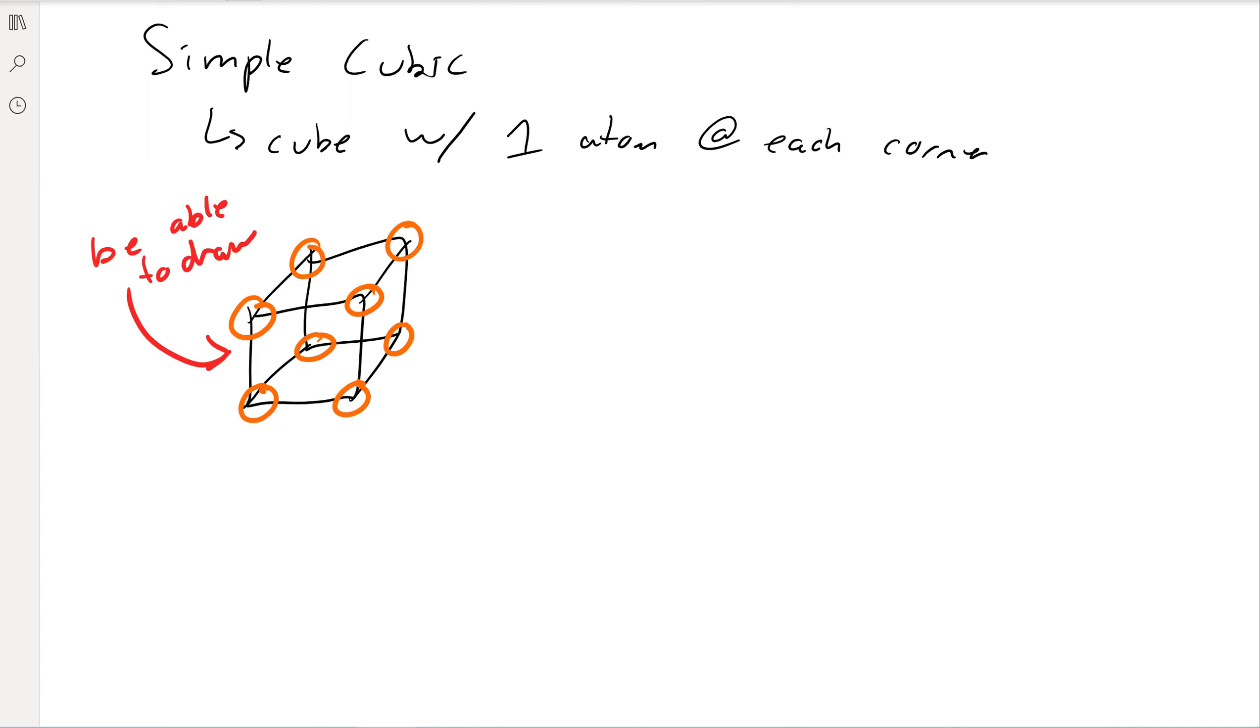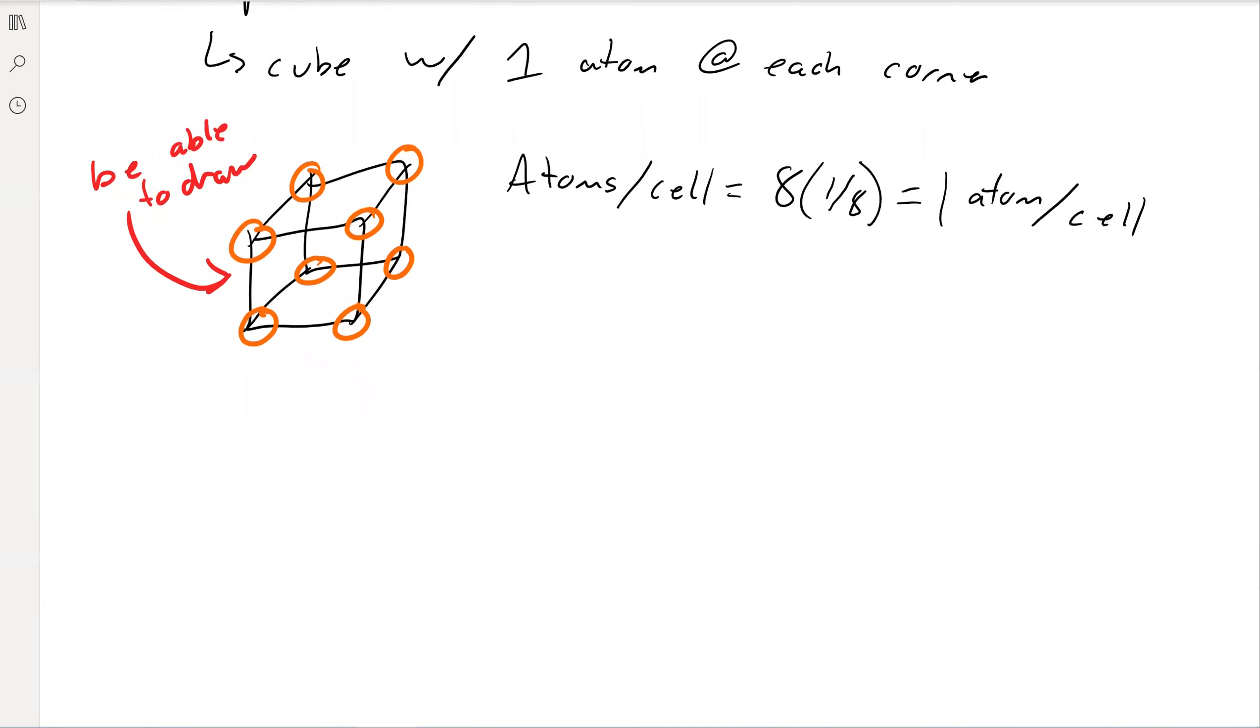We can think about different properties of this cubic cell that allow us to determine properties of the compound. First, how many atoms are per cell? We have eight atoms here, or at least part of eight atoms—one on each corner, that's eight corners. But each is only one-eighth of the way in, so eight times one-eighth equals only one atom per cell. There's really only one atom inside the cell because most of each atom isn't actually inside the cell.